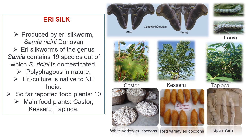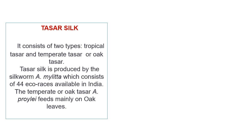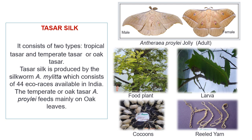The fourth variety of commercial silk is tassar silk. It consists of two types: tropical tassar and temperate or oak tassar. In India, tassar silk is produced by the silkworm Antheraea mylitta, which consists of 44 ecoraces across the country. The temperate or oak tassar, Antheraea pernyi, feeds mainly on oak leaves. In China and Japan, the tassar silkworm Antheraea pernyi is reared to produce tassar silk. Similarly, in the northeastern region of India, especially in Manipur, Antheraea pernyi is also reared to produce tassar silk.